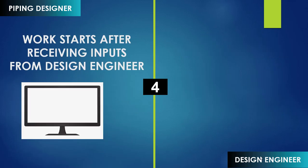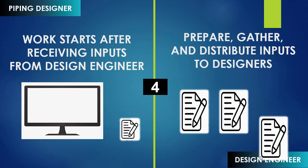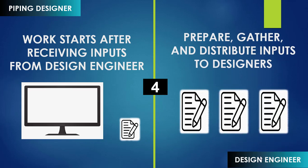The actual work of a designer starts only after receiving inputs from design engineers. Designers have to wait for the input or check with the design engineers about their input to start their work. Design engineers have to prepare, gather, and distribute these inputs to designers. The major responsibility of the designer is to receive inputs from the design engineer, and the major responsibility of the design engineer is to give those inputs to the designer.